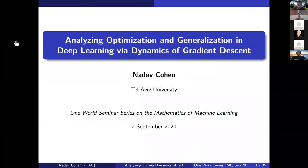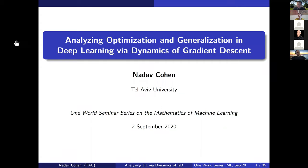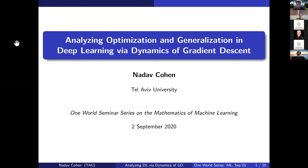Hello everyone. Today we are very lucky to have Nadav Goheng. He's an assistant professor of computer science at Tel Aviv University. His research mostly focuses on theoretical and foundational aspects of deep learning like expressiveness, optimization, and generalization, and his goal is to derive theoretically sound procedures and algorithms that will improve practical performance. He obtained his PhD from Hebrew University, then spent time at the Institute for Advanced Study working with Sanjeev Arora and Elad Hazan. He has received several awards including the Google DeepMind Fellowship, Rothschild Postdoc Fellowship, and Zuckerman Postdoc Fellowship. Let's welcome Nadav.